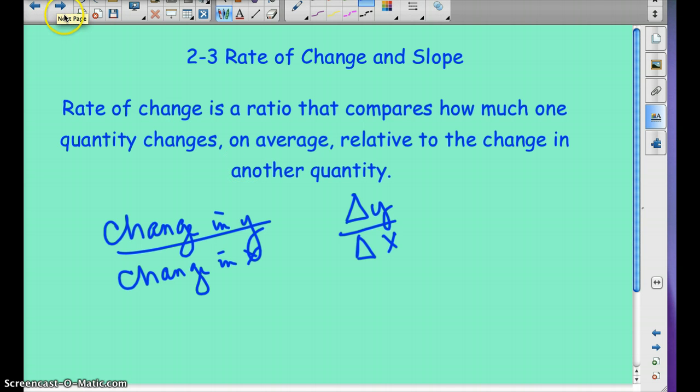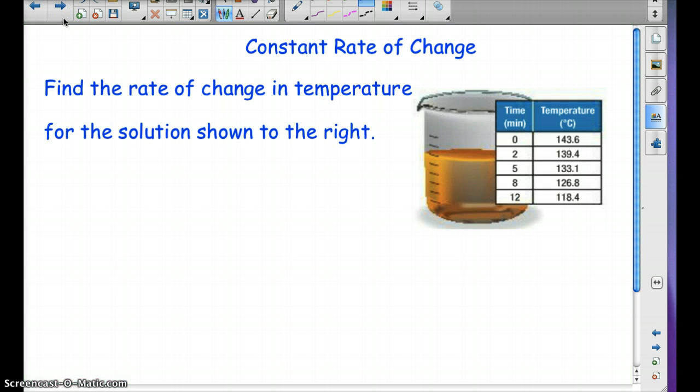So let's look at some real life situations or some real life examples where we would use rate of change. So here's a constant rate of change. Find the rate of change in temperature for the solution shown to the right. So we want to find, remember it's change in y over change in x. And in this case, y would be the temperature, so the change in temp over the change in time. Because the temperature is going to depend on time.